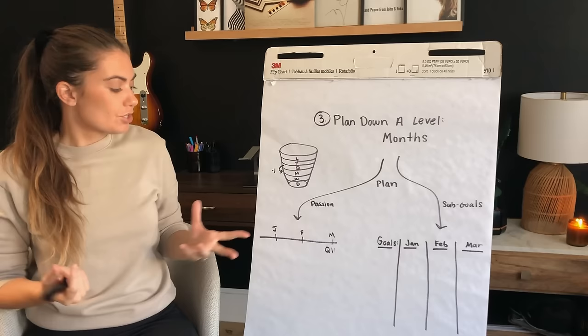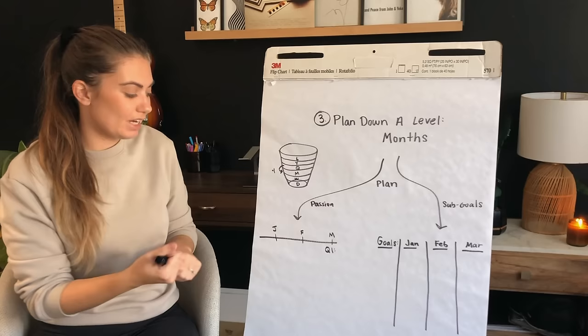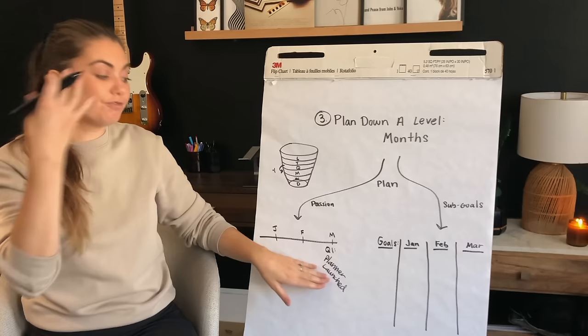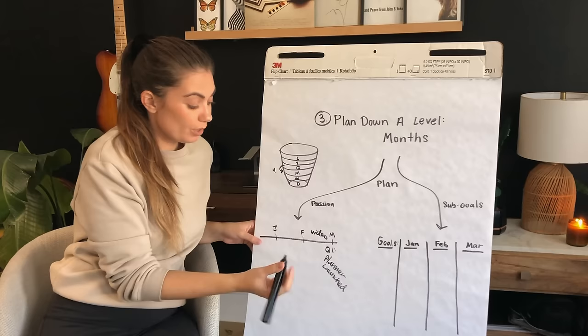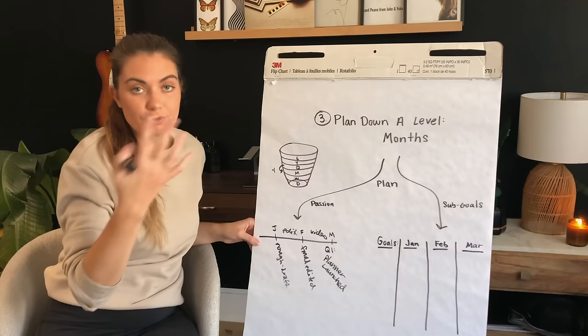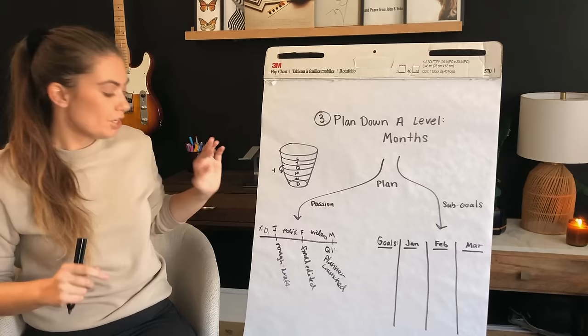Let's take my goal of wanting to have this planner launch as an example. If my goal for the end of quarter one was to have this planner launched, I can start thinking about these monthly project phases. Maybe all of March I'm planning the videos and launching the planner. Maybe by the end of February, it needs to be final edited. Maybe by the end of January, I want to have it rough drafted. So then you have these outcomes of where you want to be.